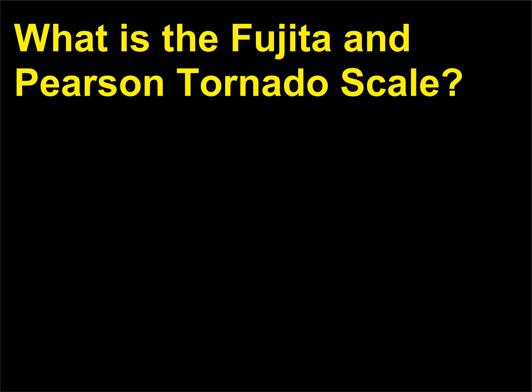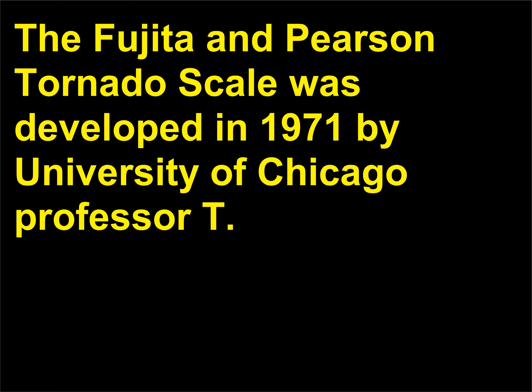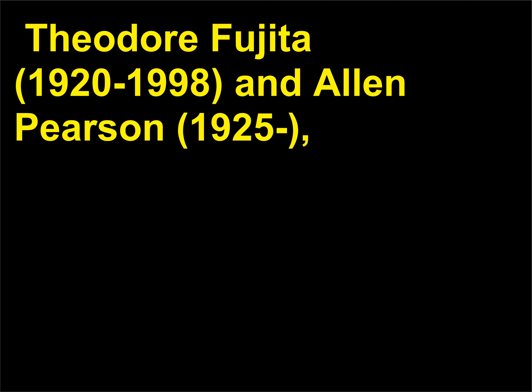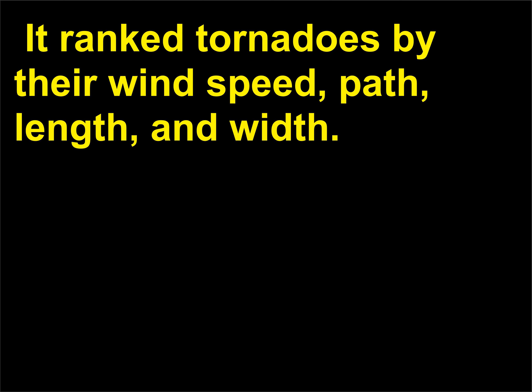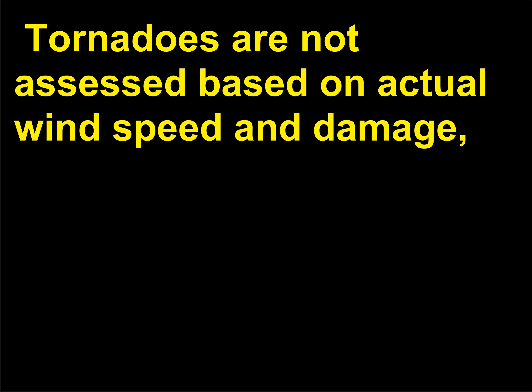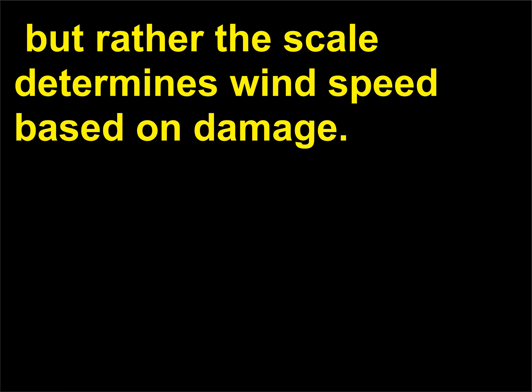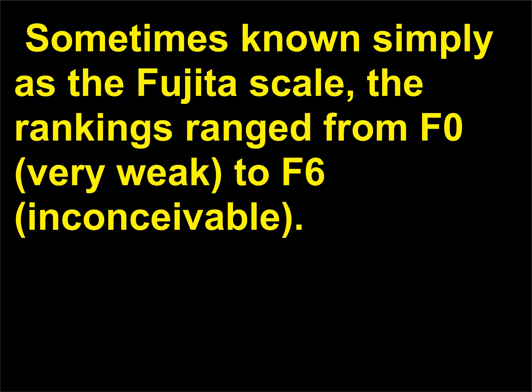What is the Fujita and Pearson tornado scale? The Fujita and Pearson tornado scale was developed in 1971 by University of Chicago Professor T. Theodore Fujita (1920–1998) and Alan Pearson (1925), who was then the director of the National Severe Storms Forecast Center. It ranked tornadoes by their wind speed, path length, and width. Tornadoes are not assessed based on actual wind speed and damage; rather the scale determines wind speed based on damage. Sometimes known simply as the Fujita scale, the rankings ranged from F0 (very weak) to F6 (inconceivable).